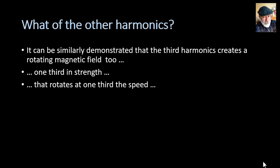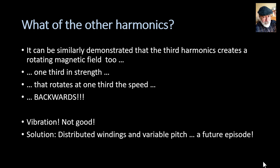But you know what is far out? That it's rotating backwards. While the fundamental is rotating at omega radians per second clockwise, the third harmonic has one third of amplitude and it's rotating backwards at one third of the speed. You realize that if you have a rotor that is following the fundamental clockwise, and every so often the negatively rotating one third magnetic field passes by, it will shake the rotor. It will create vibration and maintenance issues. That is not good. How can we eliminate that pesky third harmonic? The solution is distributed windings and variable pitch, which is a topic for a future episode.